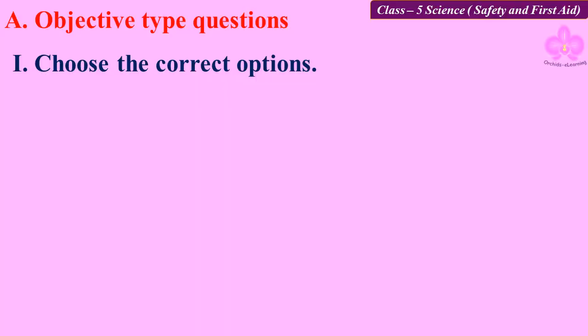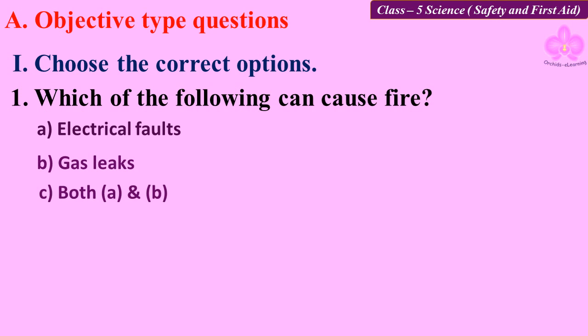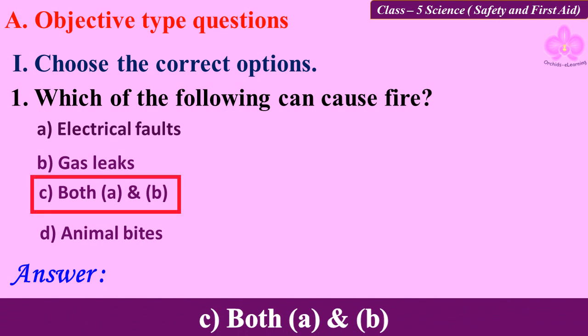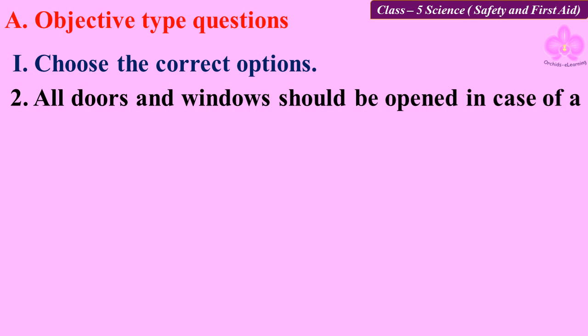Question number one: Which of the following can cause fire? Option A: electrical faults, B: gas leaks, C: both A and B, D: animal bites. Answer: both A and B.